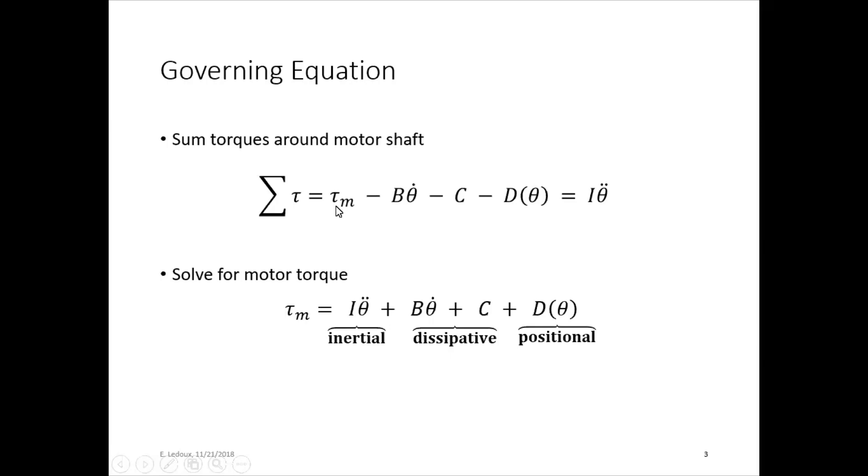So if we rearrange and solve for the motor torque, then here we get this equation. And we can see that there is an inertial term. So this is proportional to the acceleration. There's dissipative term. So this is friction. C is Coulomb friction or stiction. So that's sort of the constant value. And then Bθ̇ is a damping term.